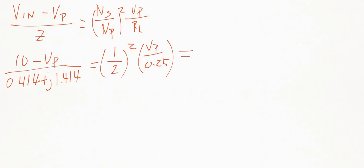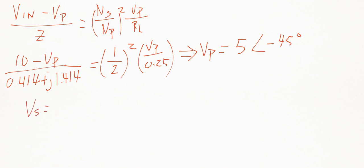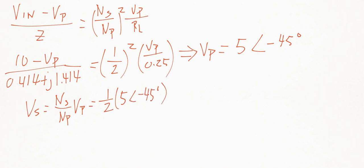Solving for Vp and converting to polar coordinates, I get 5 volts at an angle of negative 45 degrees. That gives us the primary voltage. We can then easily find the secondary voltage using the turns ratio relationship: VS = (Ns/Np) times Vp = (1/2) times 5 at negative 45 degrees. We can drop the angle at this point, giving us 2.5 volts.